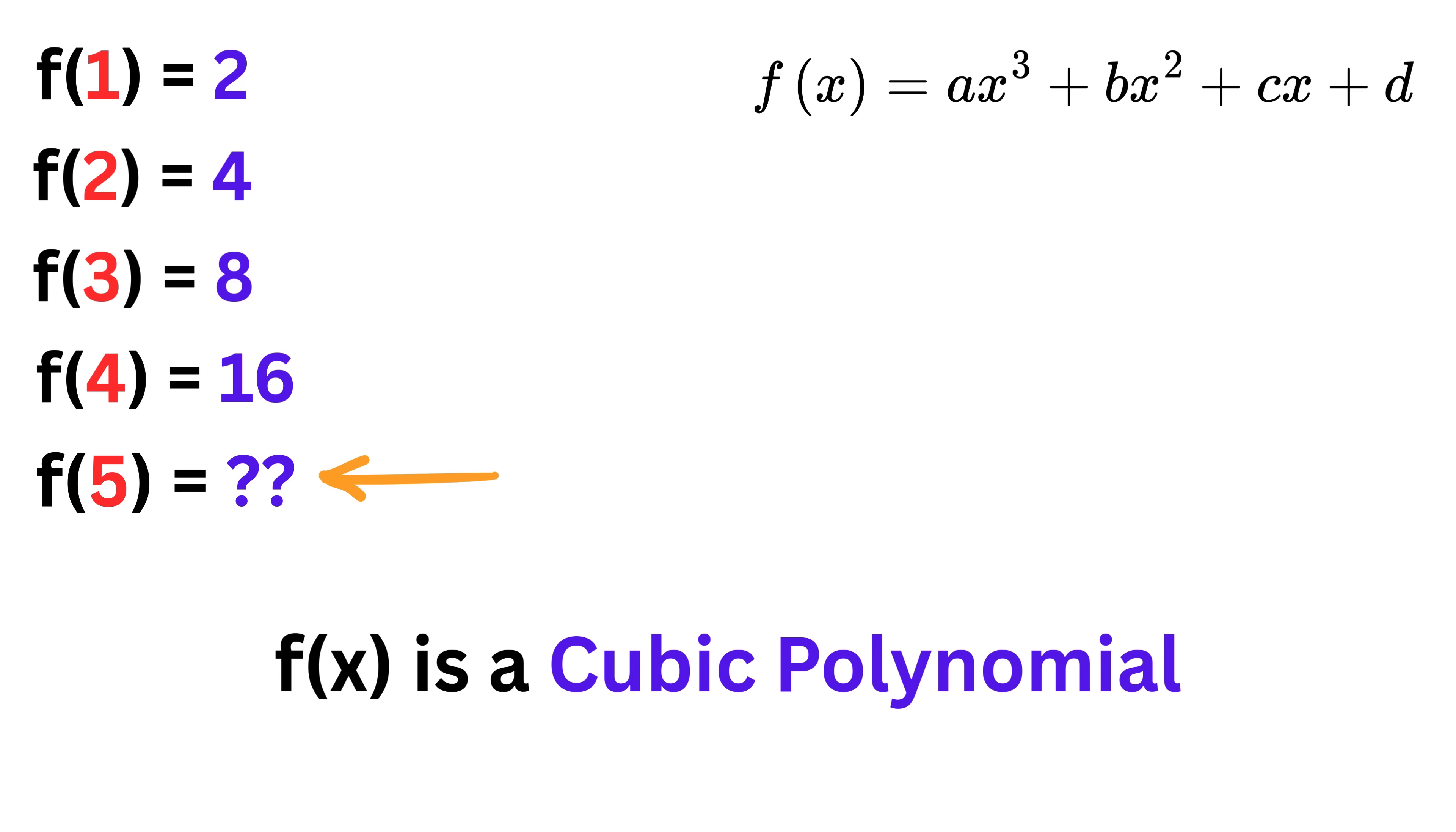Now the question is, what do we get when we enter 5? You might say it is super easy and the answer will be 32 because the outputs seem to be doubling each time, but that answer is incorrect.